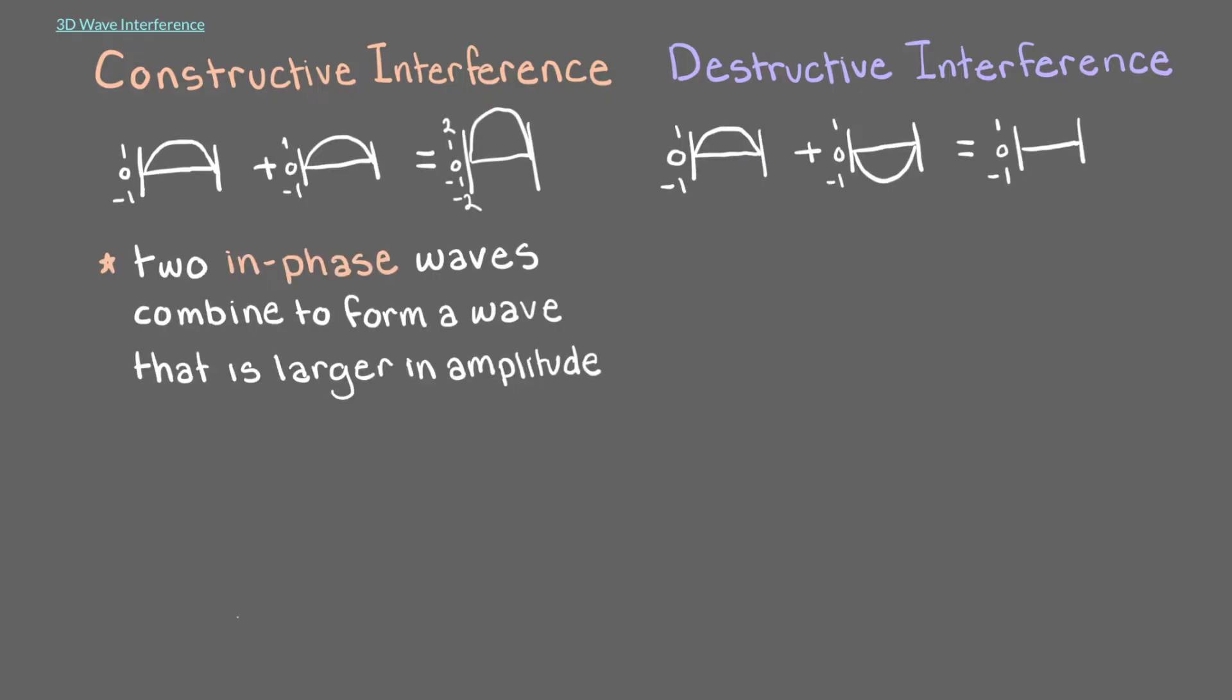Remember that constructive interference is when two in-phase waves combine to form a wave that is larger in amplitude, while destructive interference is when two out-of-phase waves combine to cancel each other out.